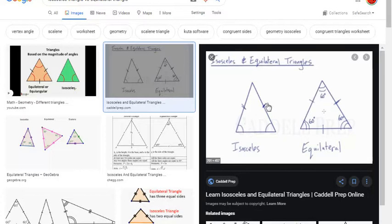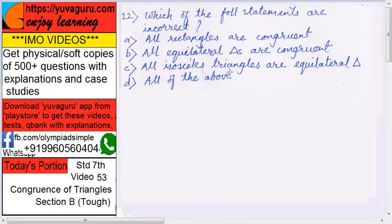Here only two sides are equal, but all equilateral triangles are compulsorily isosceles triangles. That was the catch I was trying to prove. So all of the above is the answer D.